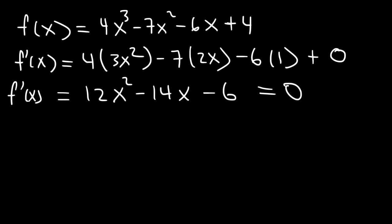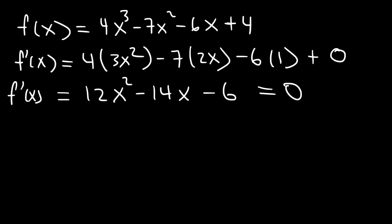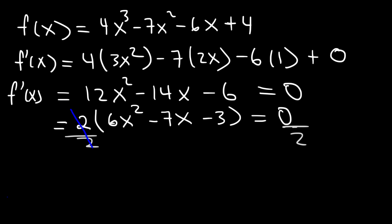To factor this trinomial, first take out the GCF, which is 2. That gives 2 times (6x squared minus 7x minus 3) equals zero. Since 0 divided by 2 is still 0, we can divide both sides by 2 and focus on factoring 6x squared minus 7x minus 3.